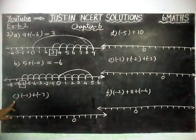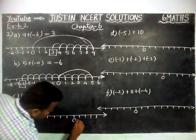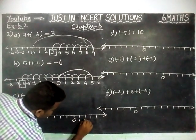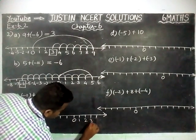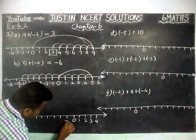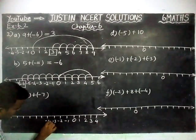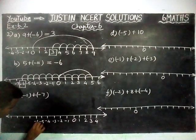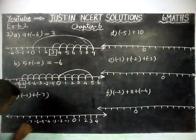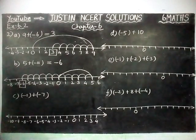And then part C: minus 1 plus minus 7. We will draw the number line first. From 0, right-hand side positive numbers, left-hand side negative numbers: minus 1, minus 2, minus 3, minus 4, minus 5, minus 6, minus 7, minus 8, minus 9, minus 10.